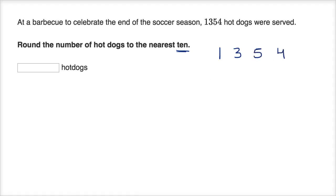Now let's remember our places. This is the ones, this is the tens, this is the hundreds place, and this is the thousands place. They want to round the number of hot dogs to the nearest 10. Right now we have five tens, but in order to round, we have to look to the next smallest place — so we'll look to the ones. And we have four ones here.